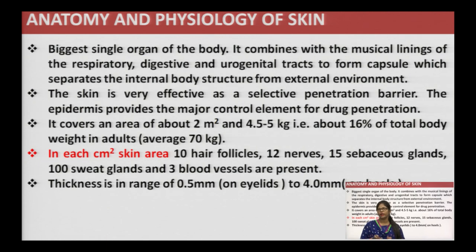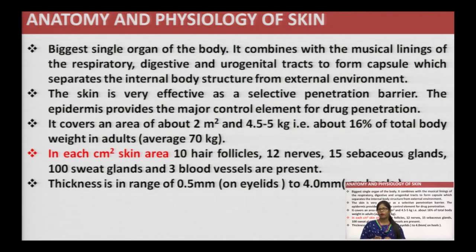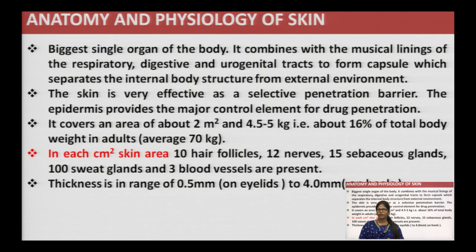Skin acts as a selective permeation barrier and provides protection from different environmental factors. In a healthy person's body, there is almost about 2 square meters of skin surface area, which makes up about 4.5 to 5 kg of total body weight — approximately 16% of total body weight. Each square centimeter of skin area contains 10 hair follicles, 12 nerves, 15 sebaceous glands, 10 sweat glands, and 3 blood vessels.